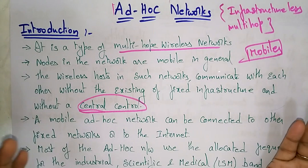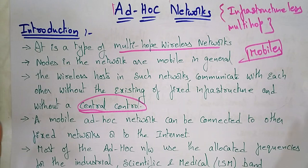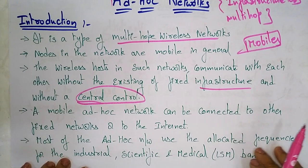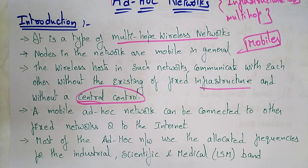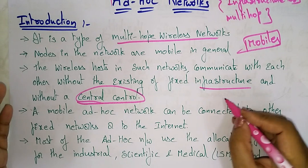The wireless hosts in such networks communicate with each other without existing fixed infrastructure and without a central controller. If you want to communicate from one mobile to another, you can do so directly — there is no need for infrastructure. A mobile ad hoc network can also be connected to other fixed networks or to the internet.